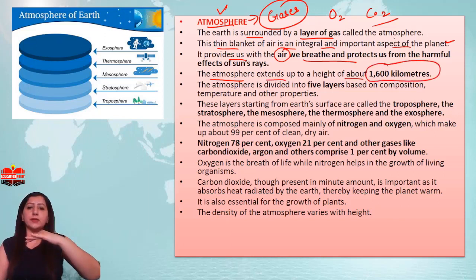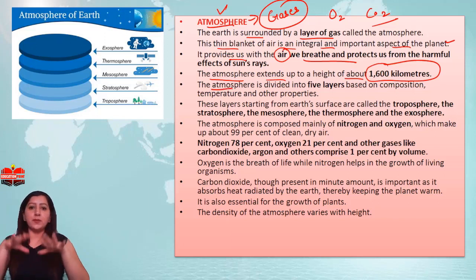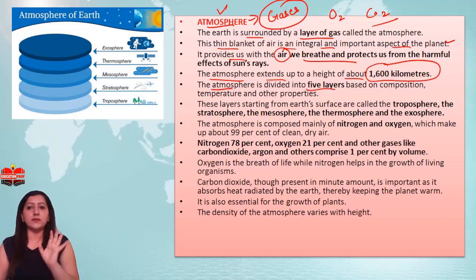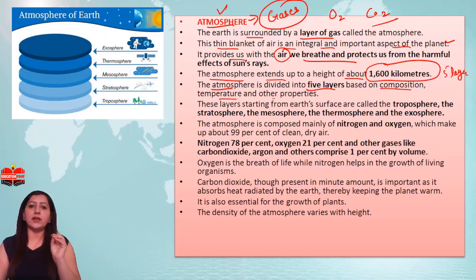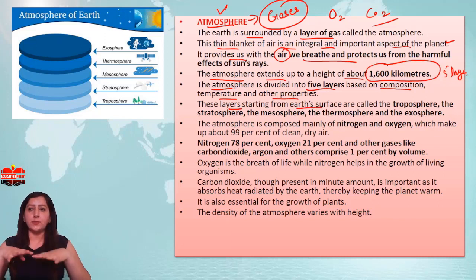If we talk about the height of the atmosphere, it extends up to about 1600 km. The atmosphere has a total of 5 layers. Based on composition, temperature, and other properties, the composition and temperature are different in each layer. These layers start from the Earth's surface and go up to 1600 km.